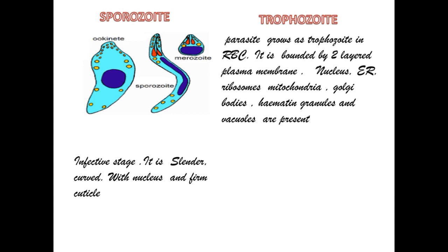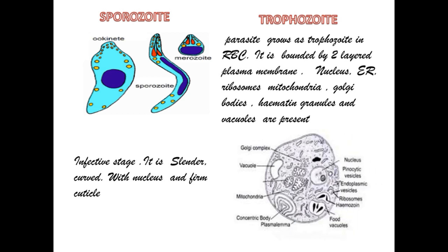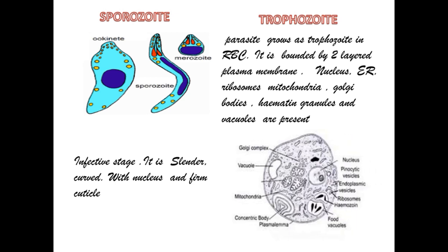When the parasite grows inside the RBC it is named the trophozoite. It is bounded by a two-layered plasma membrane. Nucleus, endoplasmic reticulum, ribosomes, mitochondria, Golgi bodies, hematin granules, and vacuoles are present. You can see all these structures in the given diagram.